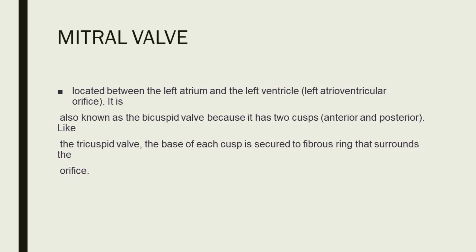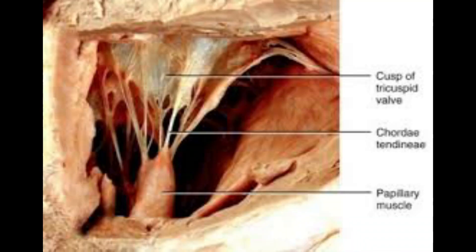The mitral valve, also called the bicuspid valve, is located between the left atrium and the left ventricle. It has two cusps — anterior and posterior. Like the tricuspid valve, the base of each cusp is secured to a fibrous ring surrounding the orifice. Both the mitral and tricuspid valves are supported by fibrous cords called chordae tendinae, which attach to the free edges of the valve cusps.